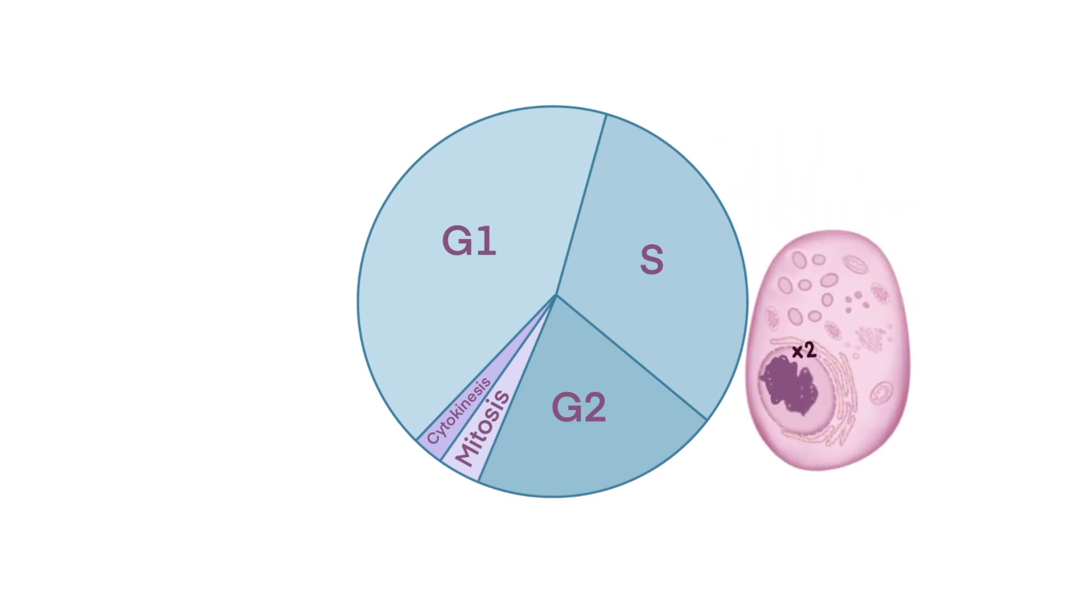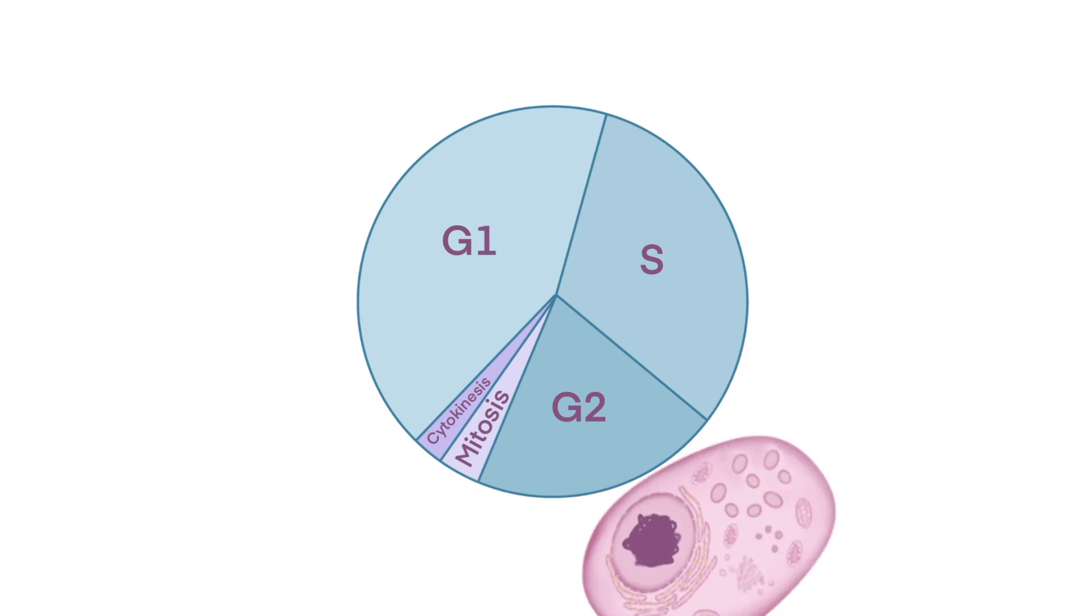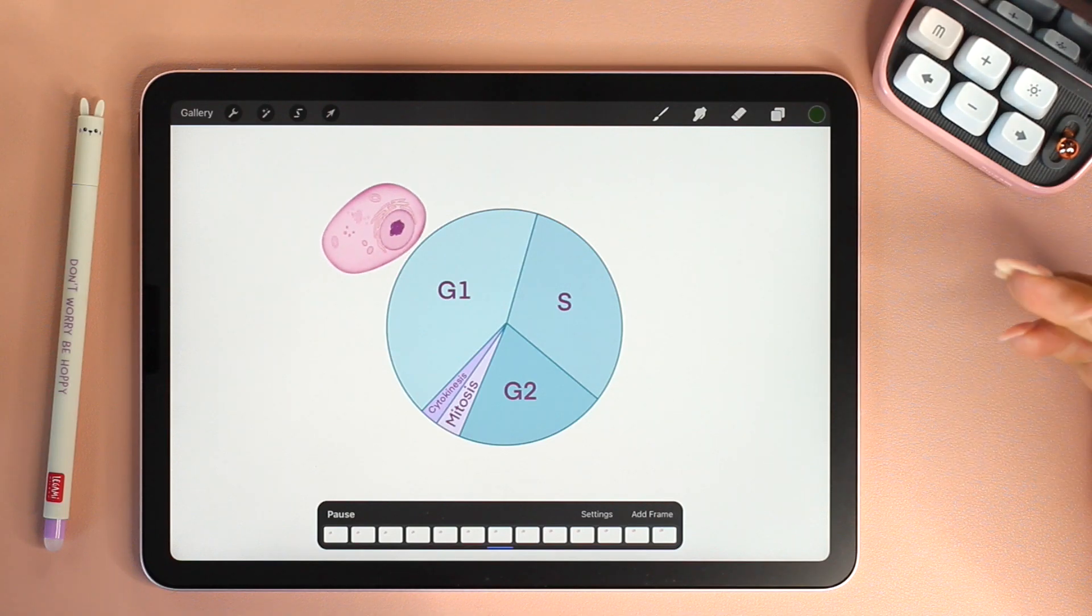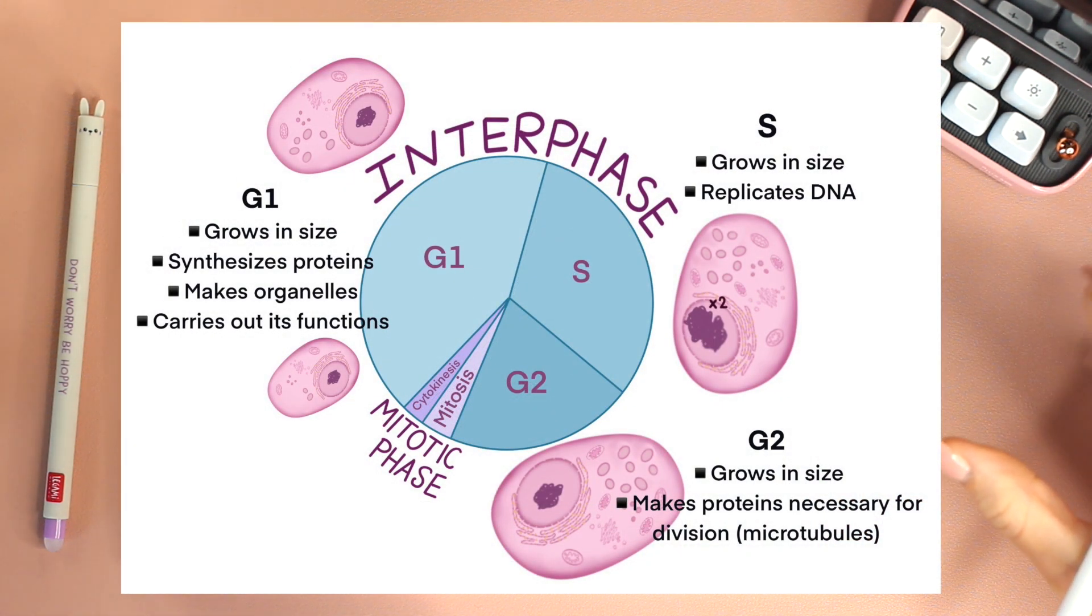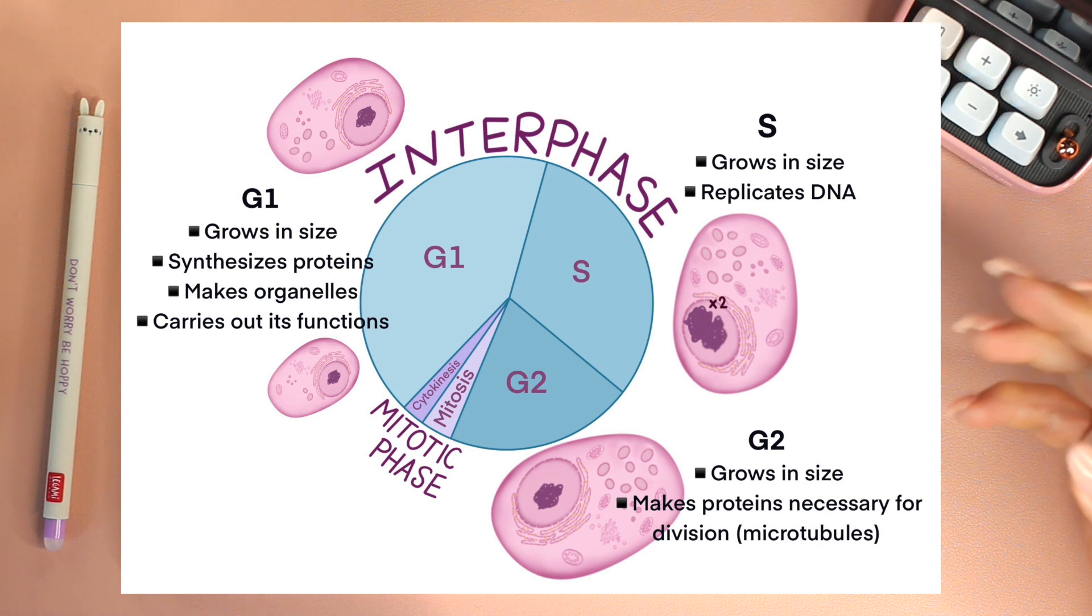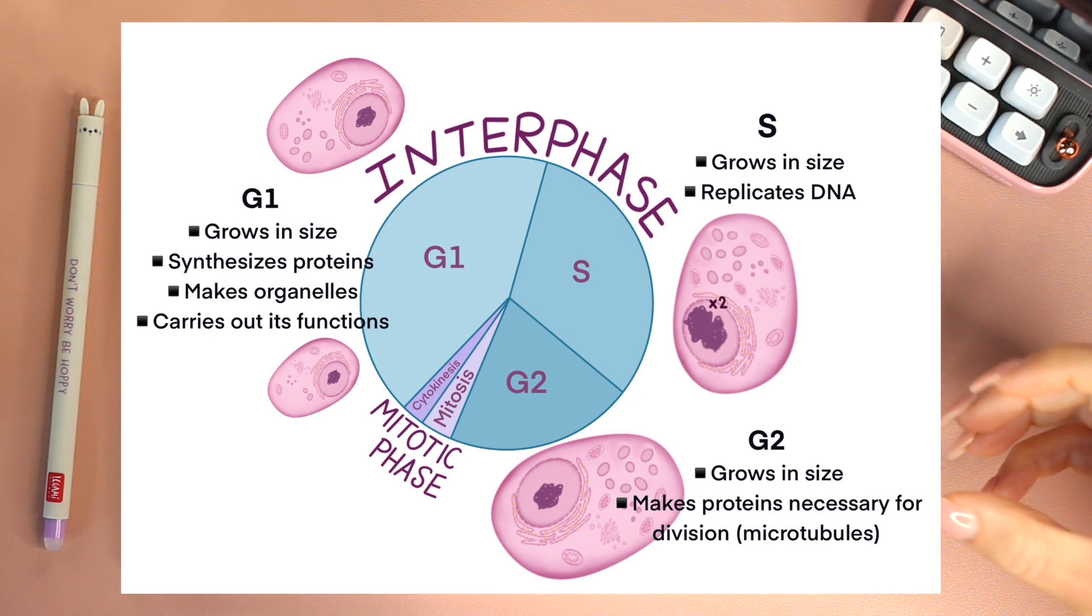G2, or GAP2, is the phase that follows synthesis. Again, during this phase, the cell is making proteins. It's growing. One example of proteins are the microtubules that are needed in mitosis.